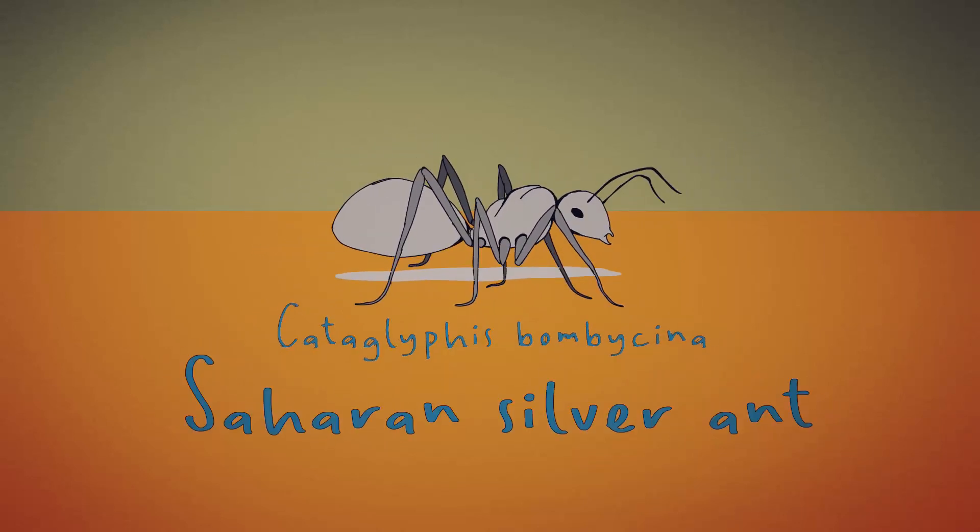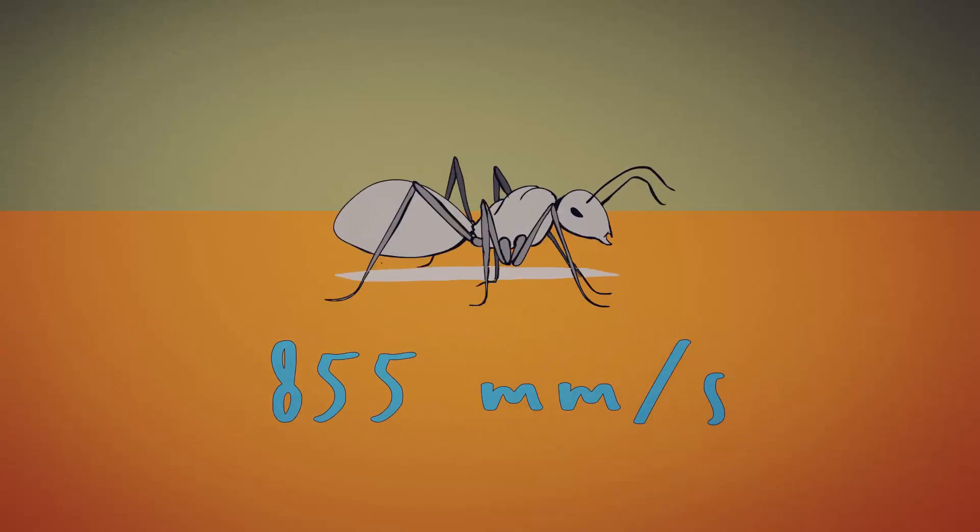is the fastest of the world's 12,000 known ant species, clocking a blistering velocity of 855 mm per second, nearly 1 m per second, or 3.6 km per hour.